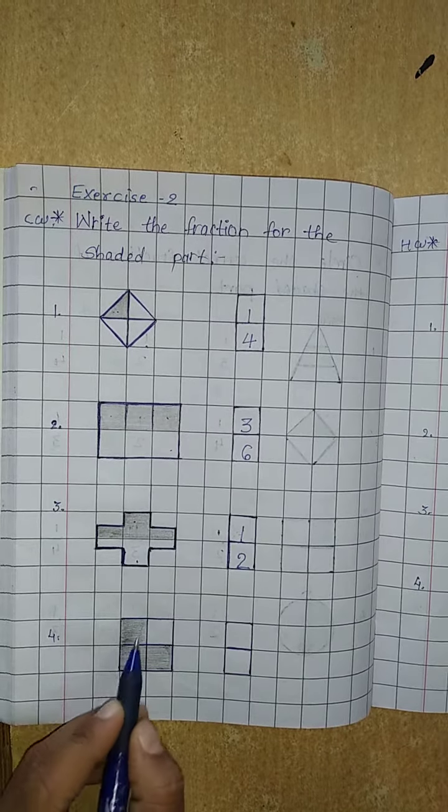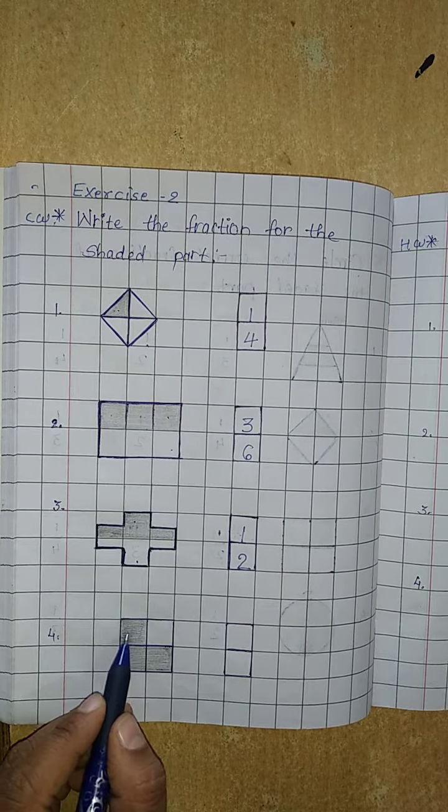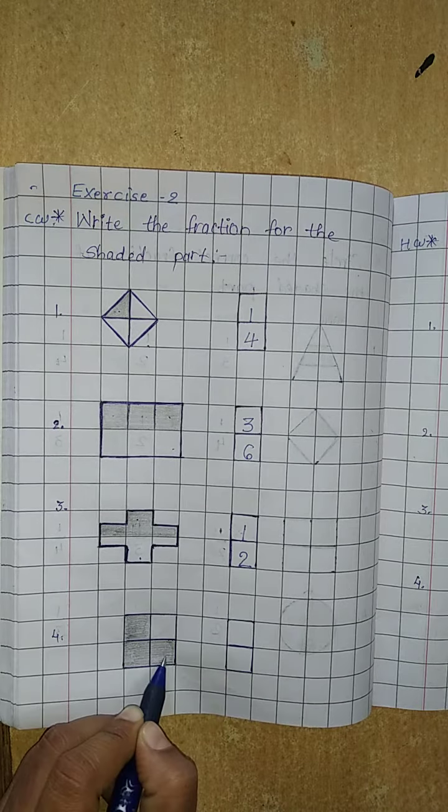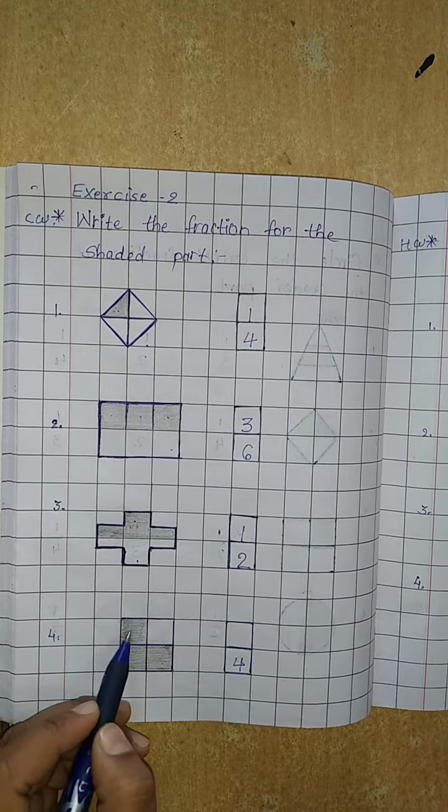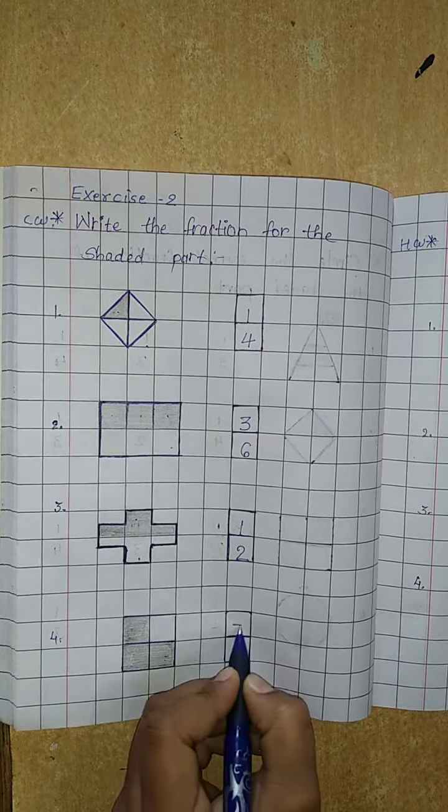Now next, number 4. Here how many parts? 1, 2, 3, 4 parts. So write 4 downside. And how many shaded parts? 1, 2, and 3. So write 3 upside.